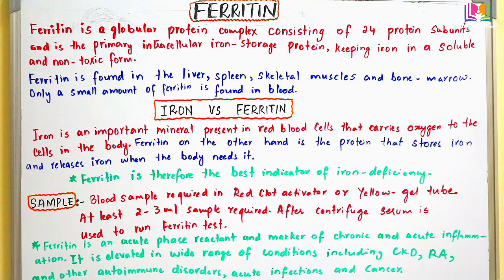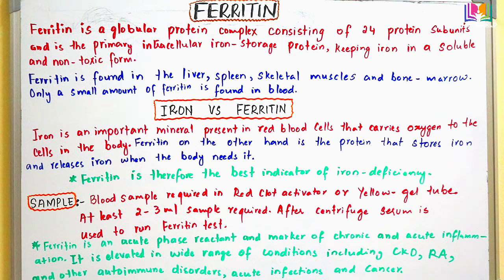Ferritin is an acute phase reactant and a marker of chronic and acute inflammations. Acute phase proteins are a class of proteins whose concentration in blood either increases or decreases in response to inflammation — this response is called the acute phase reaction or acute phase response. There are two important proteins to check to diagnose inflammation: C-reactive protein (CRP) and ferritin. So ferritin is also an acute phase reactant and marker for chronic and acute inflammations.